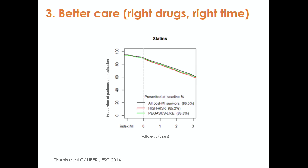Assuming safe treatment, we want better care — the right drugs at the right time. Here is an example: in people with cardiovascular disease, statins, which lower the bad cholesterol, are supposed to be taken lifelong. But after a heart attack, over subsequent years there is a gradual decline in the number of people still on these drugs. The electronic health records are both identifying the problem and, through decision support tools embedded in the record, pointing to potential solutions.